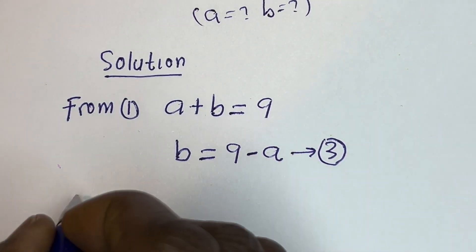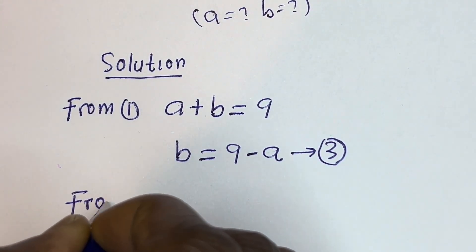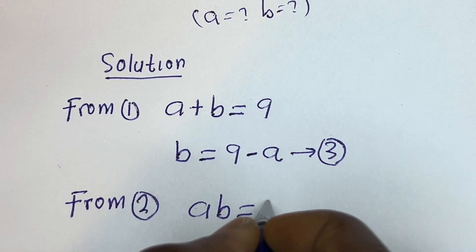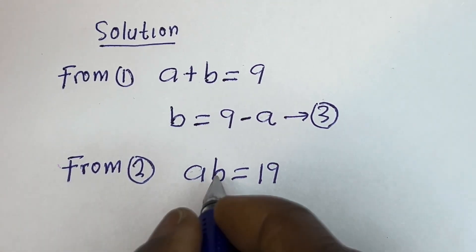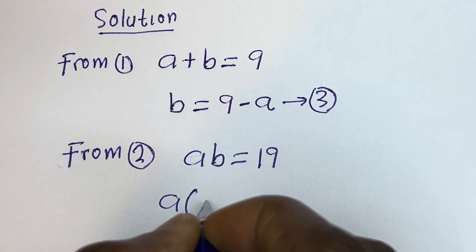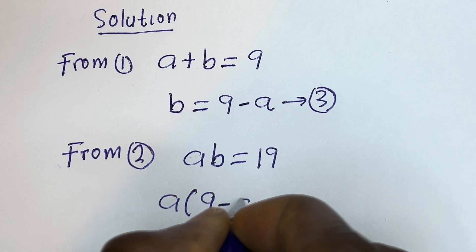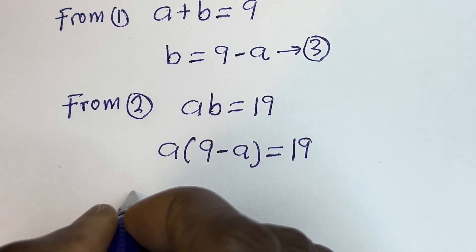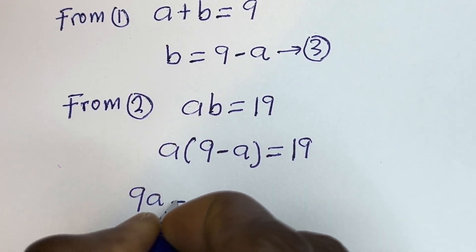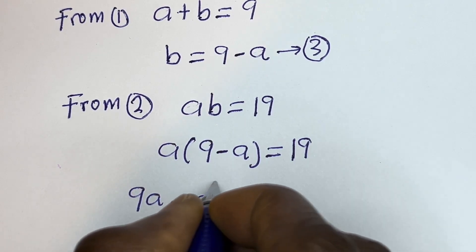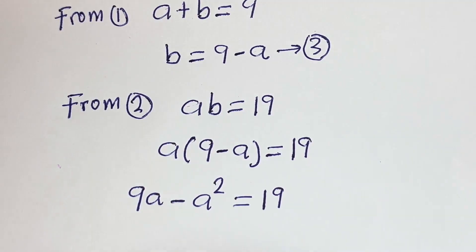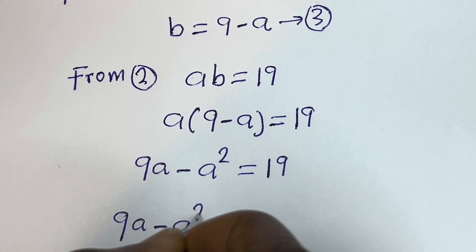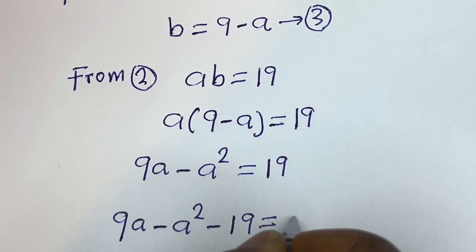Also, from equation 2, we have ab is equal to 19. We can substitute for b: a times (9 minus a) is equal to 19. Now, a multiplied by 9 is 9a, minus a multiplied by a is a squared, so 9a minus a squared is equal to 19.